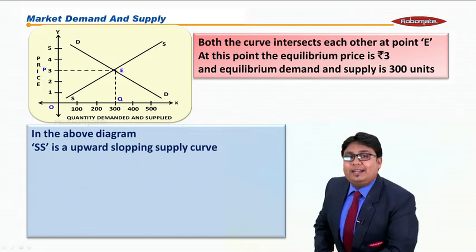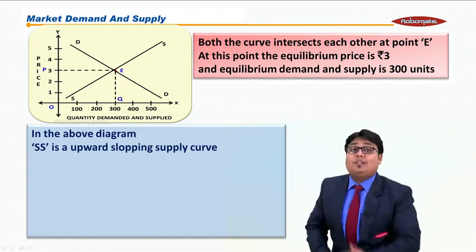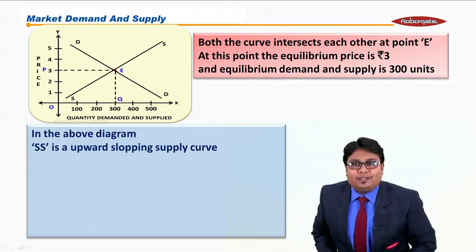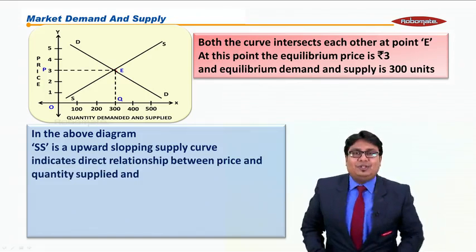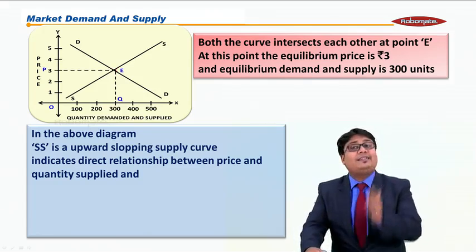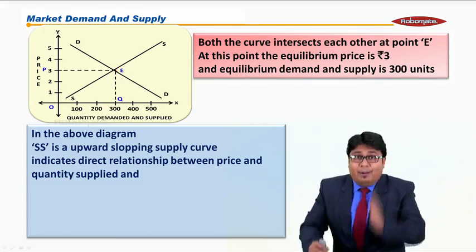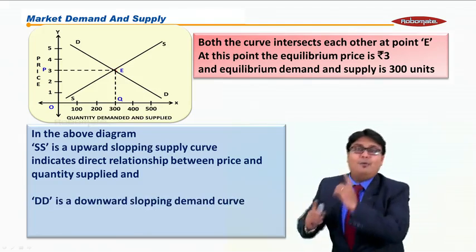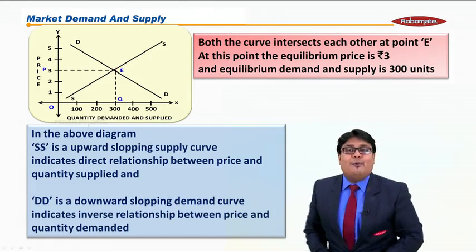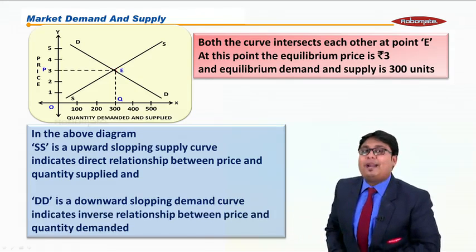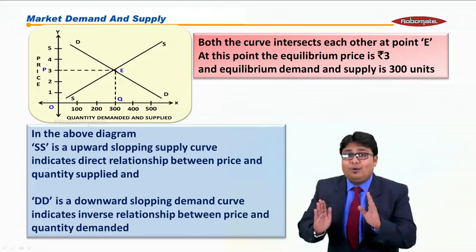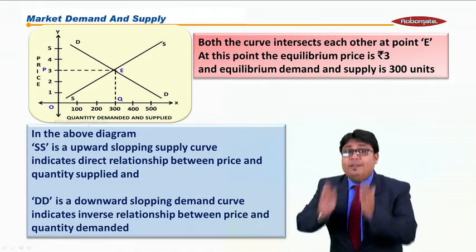In the above diagram, the supply curve is an upward sloping curve because it indicates a direct relationship between price and quantity supplied. But when I talk about the demand curve, it was downward sloping because it indicates the inverse relationship between price and quantity demanded.